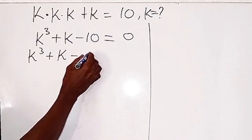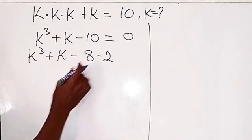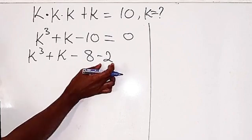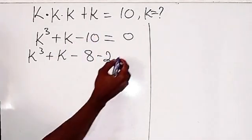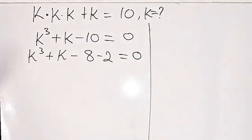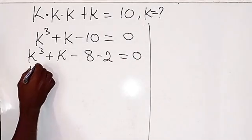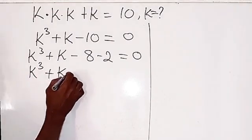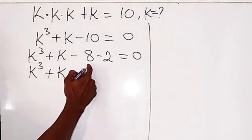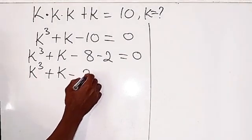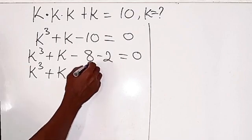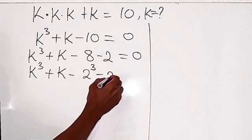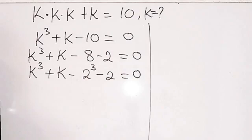I can rewrite this 10 as 8 plus 2, so that's minus 8 minus 2, which gives us minus 10. Then we have to equal 0. I have k to the power of 3 plus k minus 8, which can be written in terms of base 2 as 2 to the power of 3, then minus 2 equals 0.